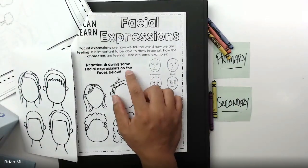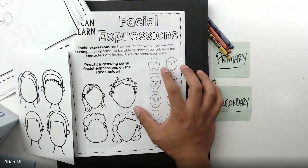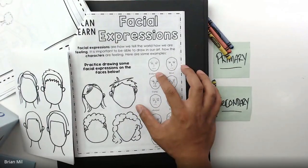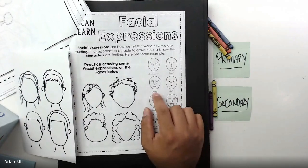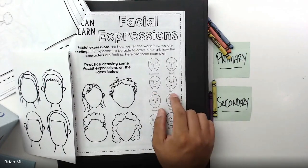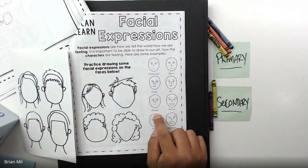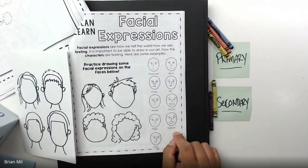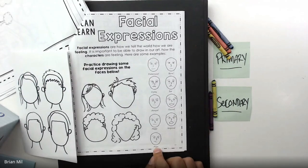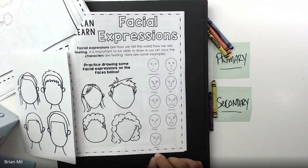It says practice drawing some of the facial expressions on the faces below. Don't do it yet, let's just go over them real quick. Over here we have embarrassed, bored, crying, sad, annoyed, excited, happy, surprised, and angry. Now you've seen all these emotions, and I'm sure there's way more.